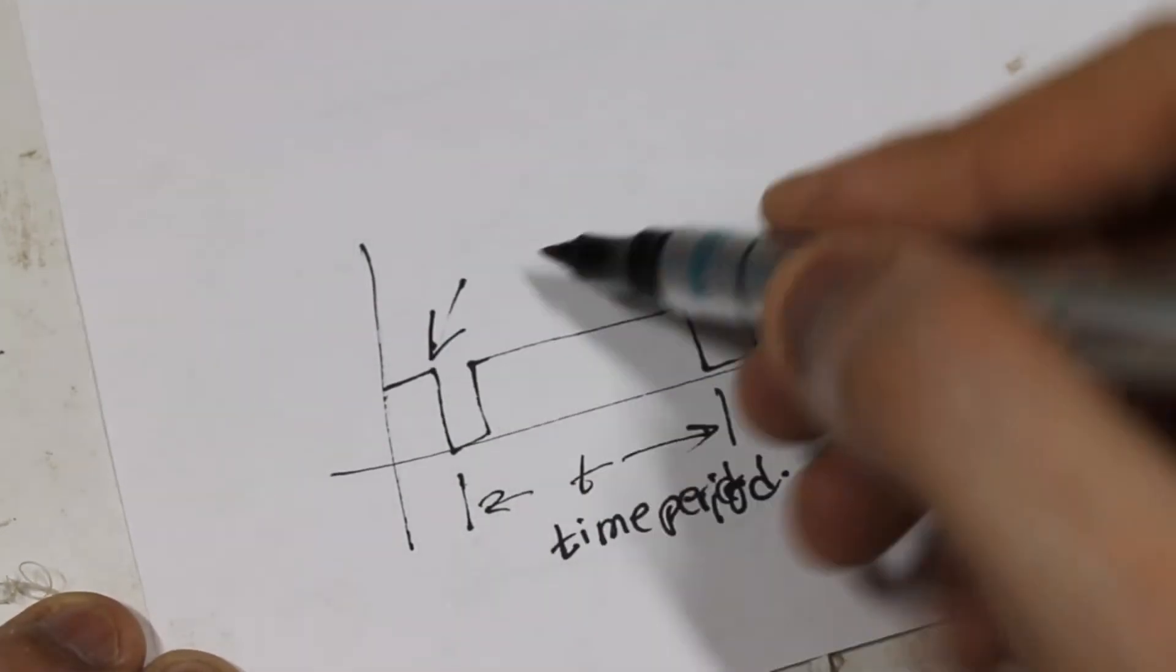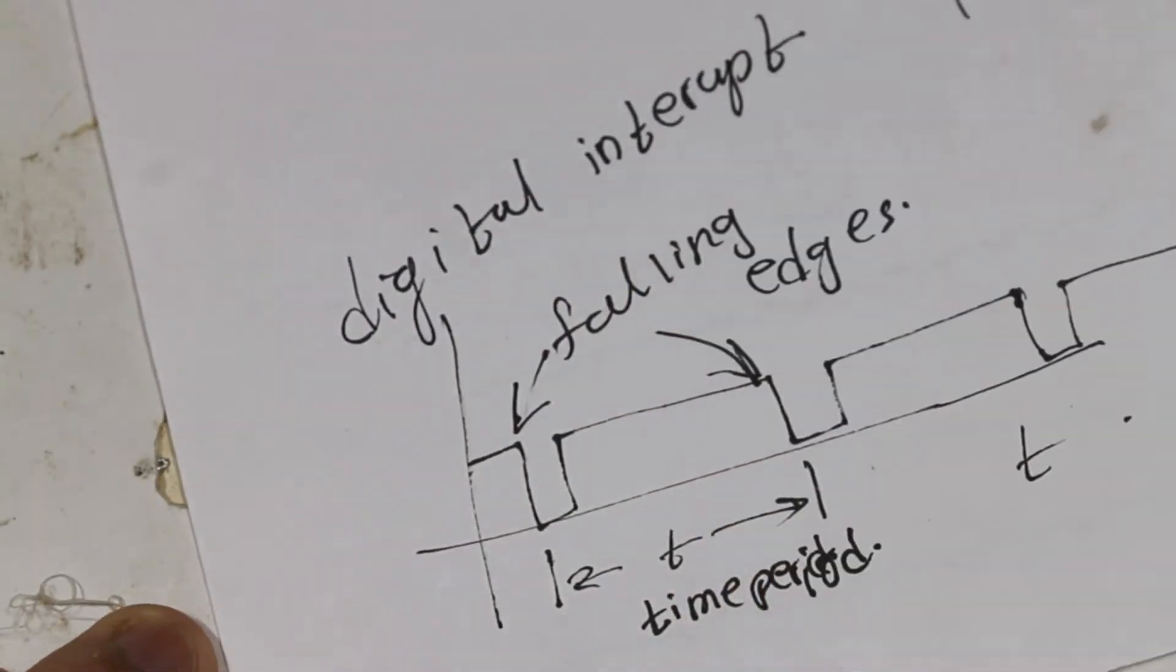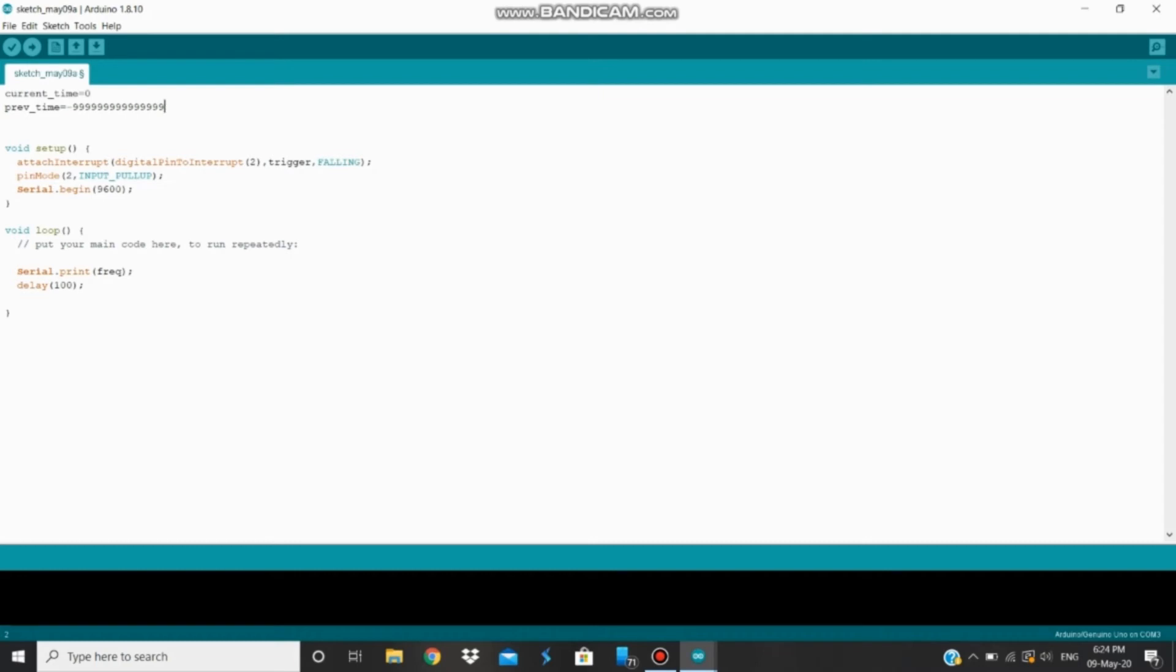To capture these falling edges, we need to utilize the digital interrupt function of the Arduino. Interrupts are always the priority for the microcontroller. When the interrupt condition is met, in this case the falling edge, the microcontroller quits the original loop to follow the ISR route.